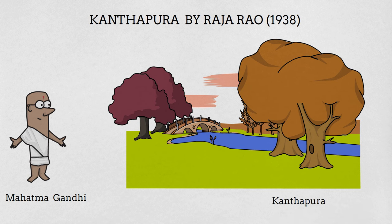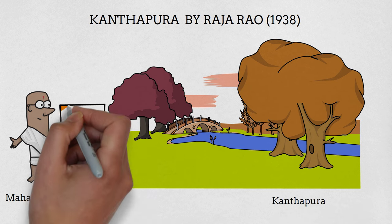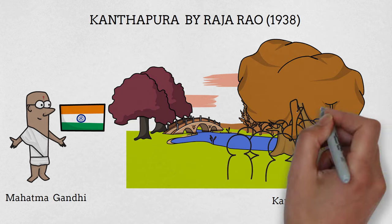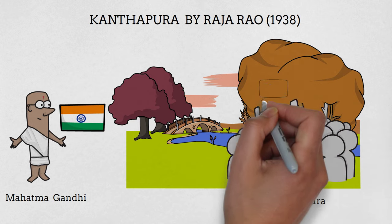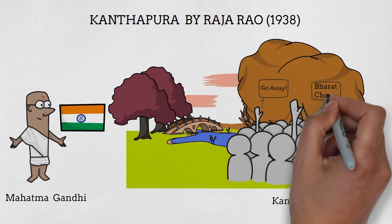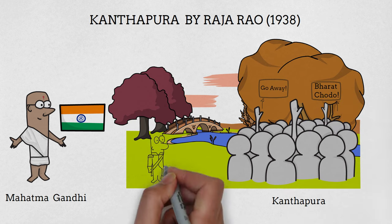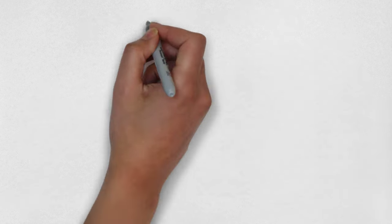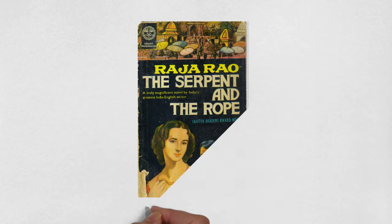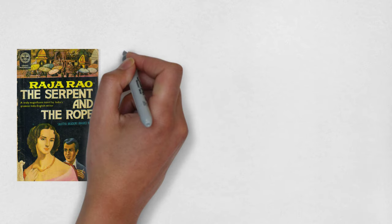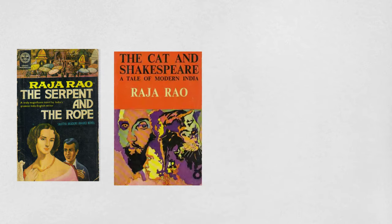In this novel, Gandhi's teaching and the struggle for independence fuel the villagers with a sense of pride — they give up every materialistic thing and stand against the Britishers. Raja Rao has written other famous works like The Serpent and the Rope and The Cat and the Shakespeare, A Tale of India.